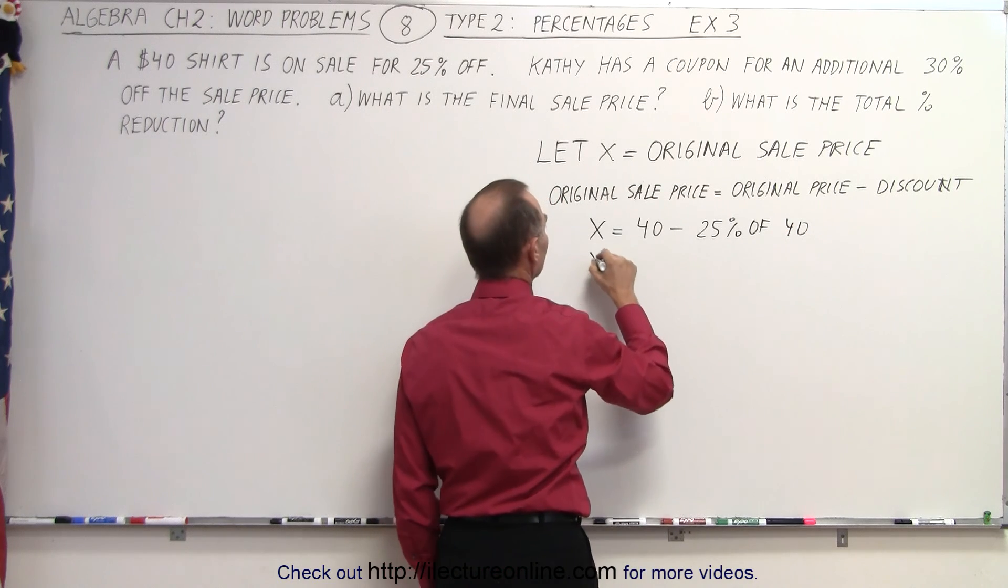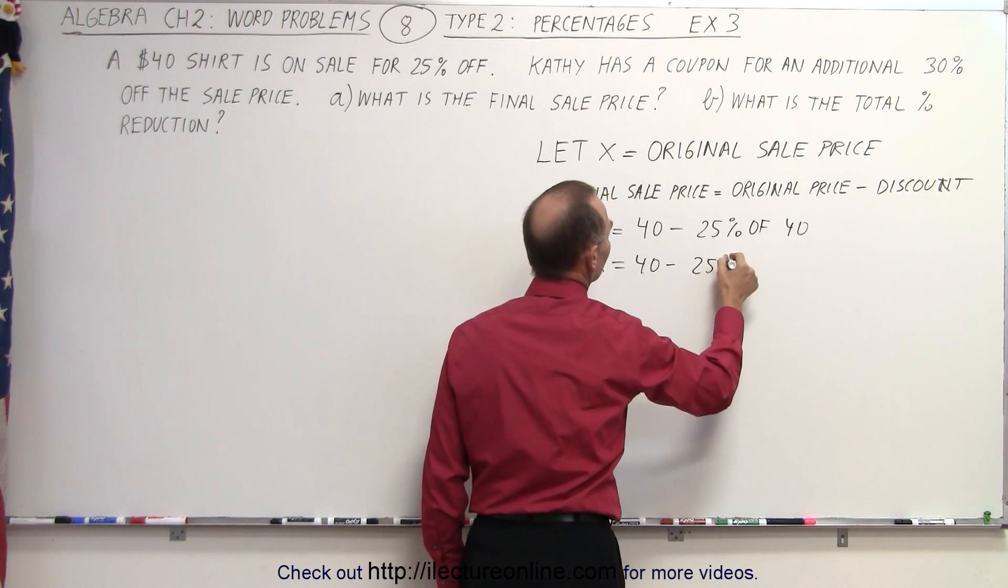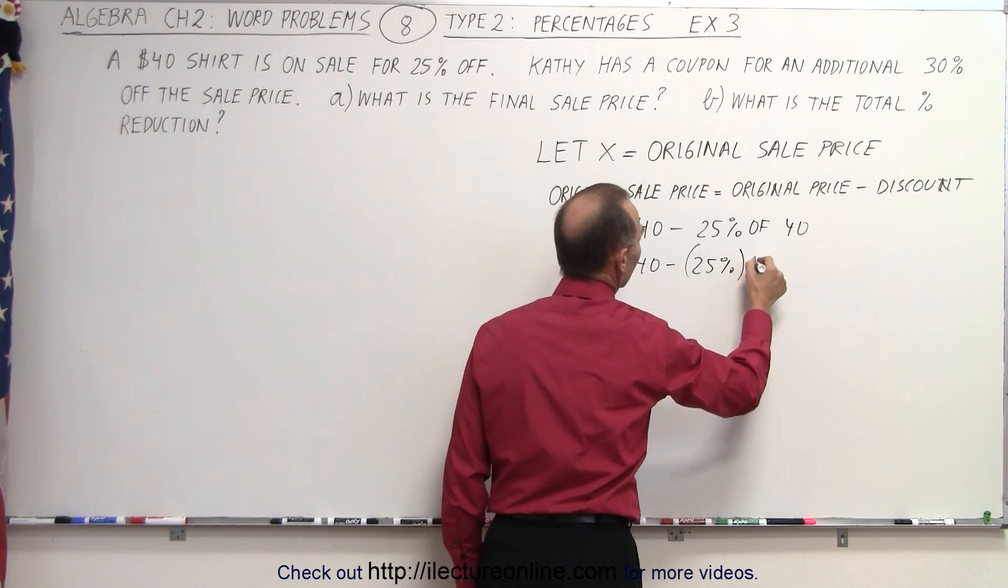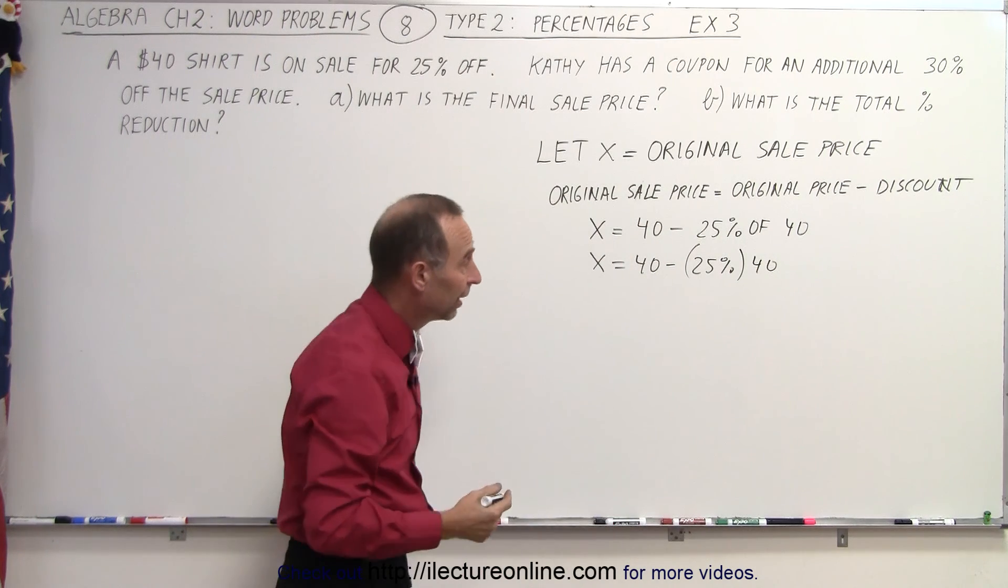So when we write that mathematically, we can say x is equal to 40 minus 25% times $40, because when we write 25% of, that's the same as multiplication. And then, of course, we want to write that as a decimal.